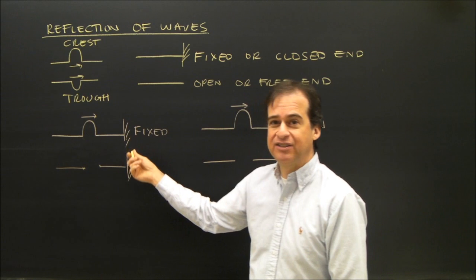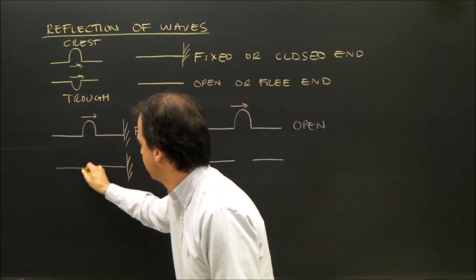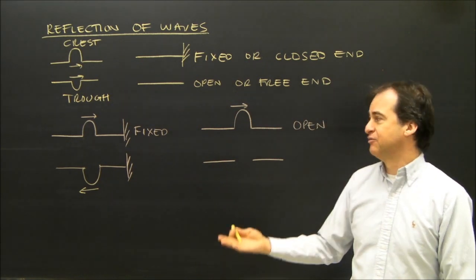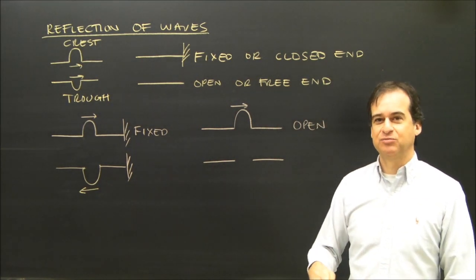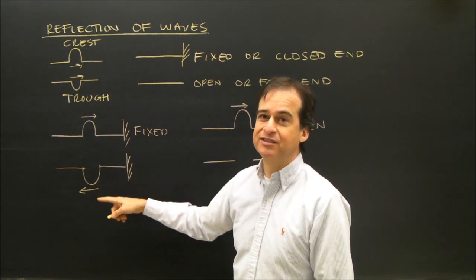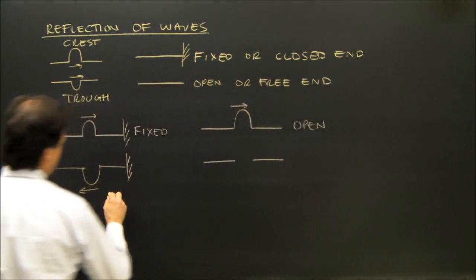When a crest hits a fixed end, it comes back as a trough. Which means also when a trough hits a fixed end, it comes back as a crest. Whatever the wave does, it comes back as the opposite. When something comes back and it's the opposite, we call it out of phase.